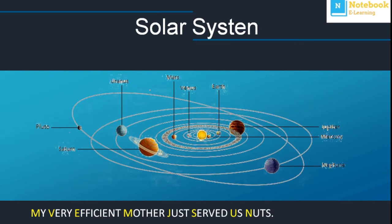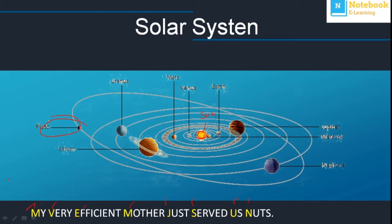This is our solar system. At the centre is the Sun. To remember all the planets, here is a trick: 'My Very Efficient Mother Just Served Us Nuts' — M is Mercury, V is Venus, E is Earth, M is Mars, J is Jupiter, S is Saturn, U is Uranus, and N is Neptune. Pluto was discovered recently but is now classified as a dwarf planet.